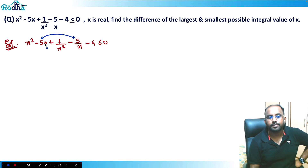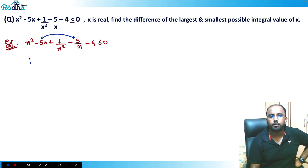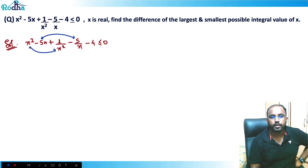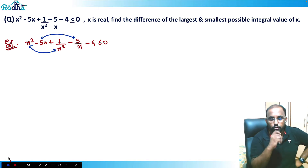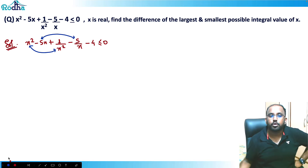That means if I take -5 common, it becomes x + 1/x. And already we have x² + 1/x². So I can write x + 1/x from here as well.